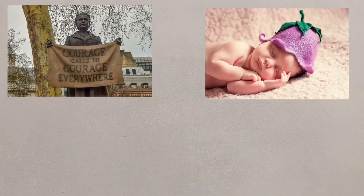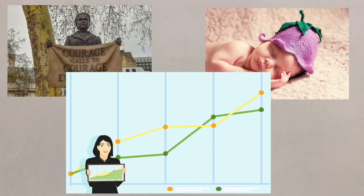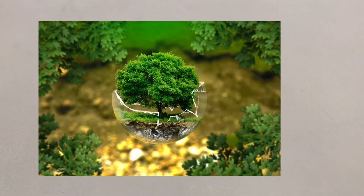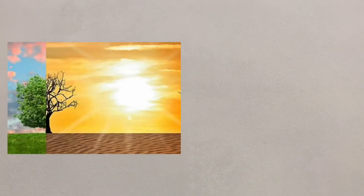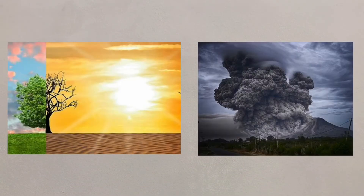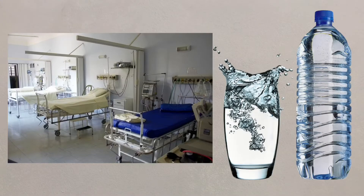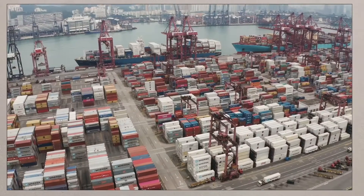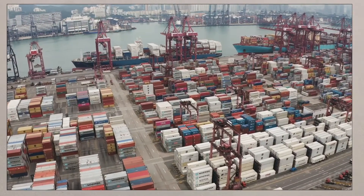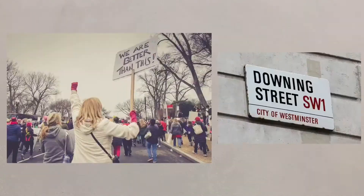There are different factors that can affect the level of development. Environmental factors, such as climate or natural hazards. Social factors, such as access to safe water or hospitals. Economic factors, such as trade, and even political factors, such as the stability of the government, will all affect the development of a country.